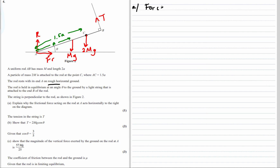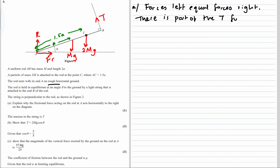Forces left equal forces right. Part of T is acting left, so friction must act right. Friction must act to the right because the forces left must equal the forces right. Tension T is 2mg cos theta.